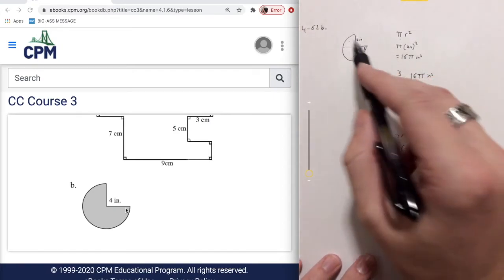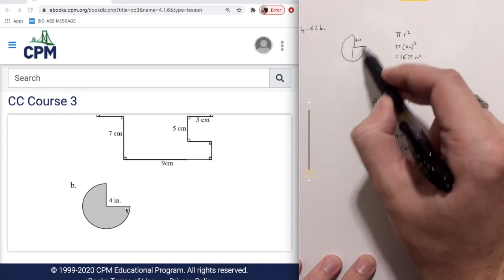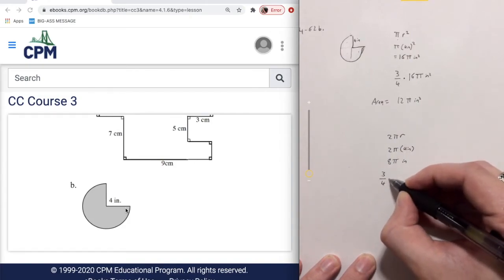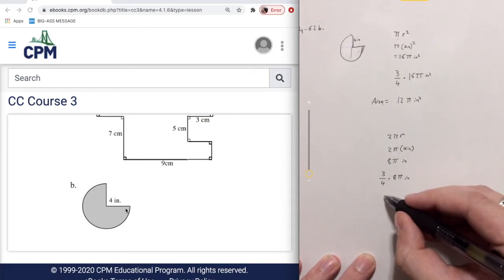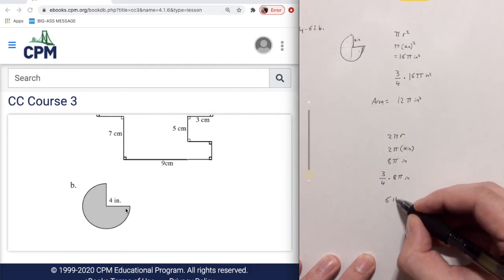But once again, this is only three quarters of the way around a circle. So we're going to multiply it by 3 over 4 by 8 pi inches, and that's going to give us 6 pi inches.